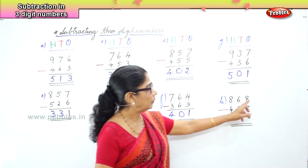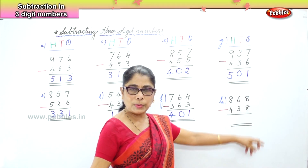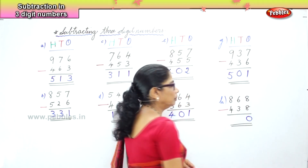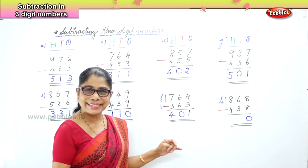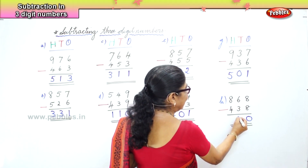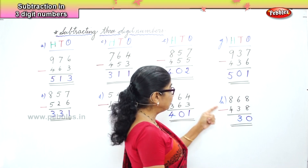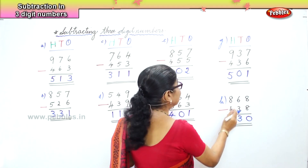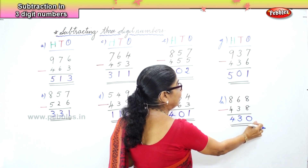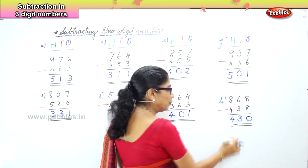And finally, we have the last sum. In the 1s place, we have 8 ones minus 8 ones. 8 take away 8 is 0. Then we have 6 tens take away 3 tens. 6 minus 3 is 3. And then we have 800 minus 400. 8 minus 4 is 4. The answer is 430.